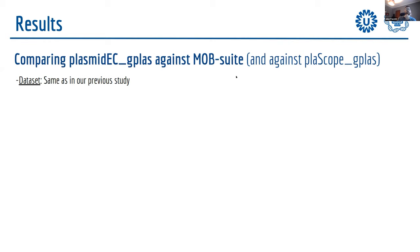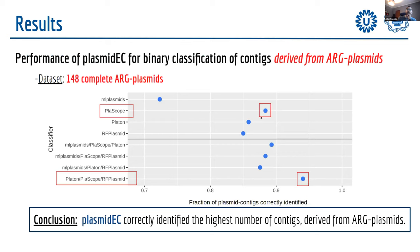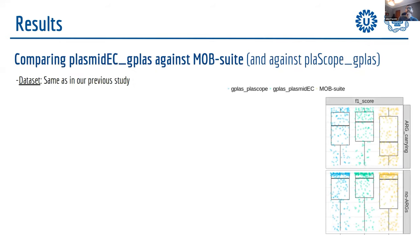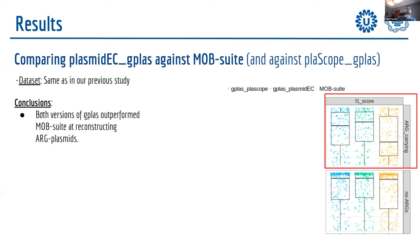We then compared the combination of PlasmidEC and GPlas against MOB-suite — the best performing tool from our previous study — using the same dataset to retain comparability. We also tested GPlas combined with PlasmidScope output, since PlasmidScope was the best individual classifier. For plasmids without ARGs there was no big difference, but for plasmids containing antibiotic resistance genes, the F1 score was much higher for both methods incorporating GPlas.